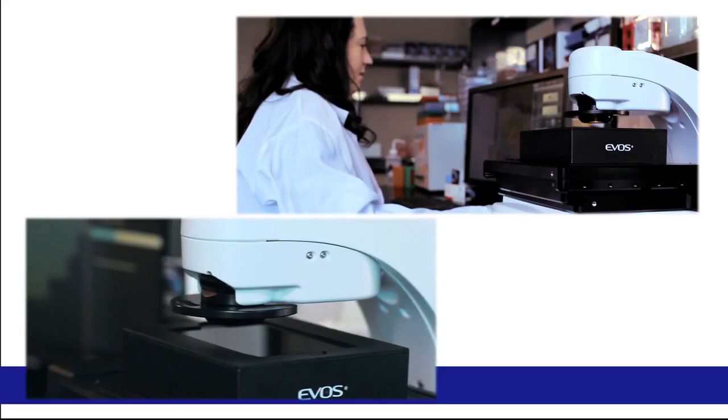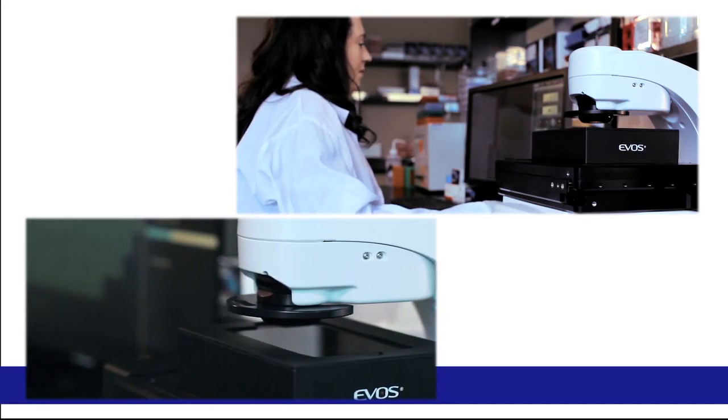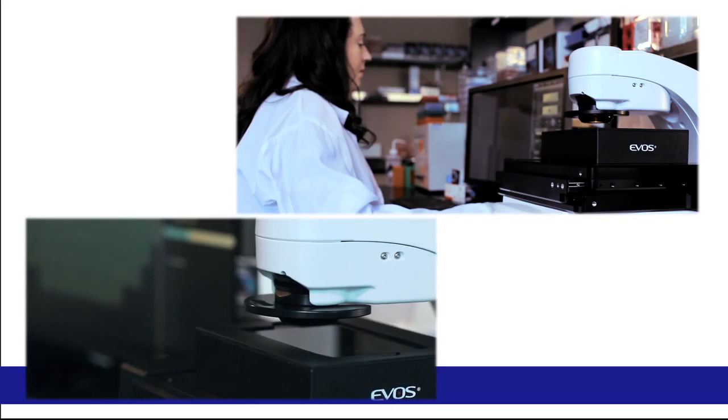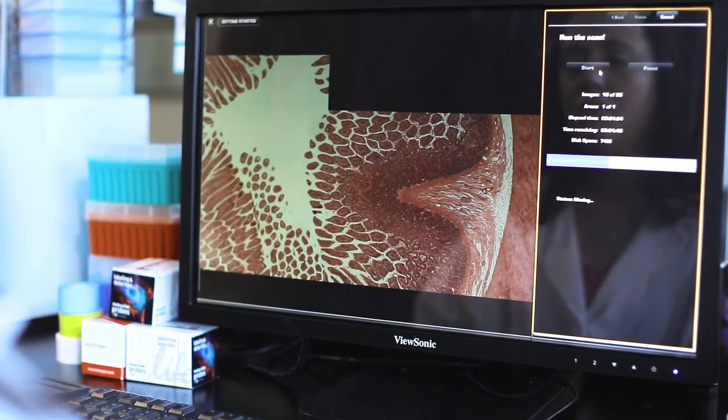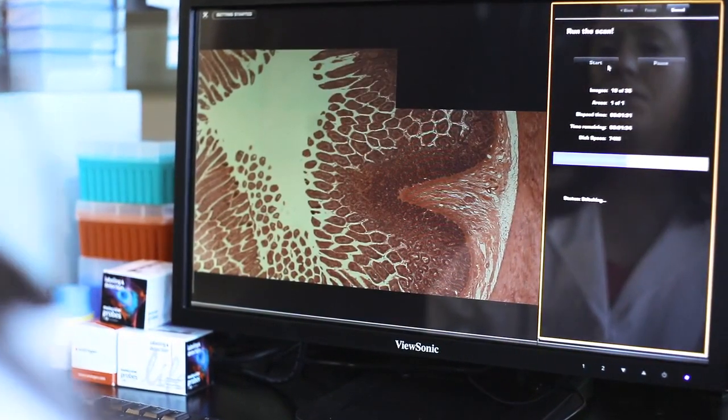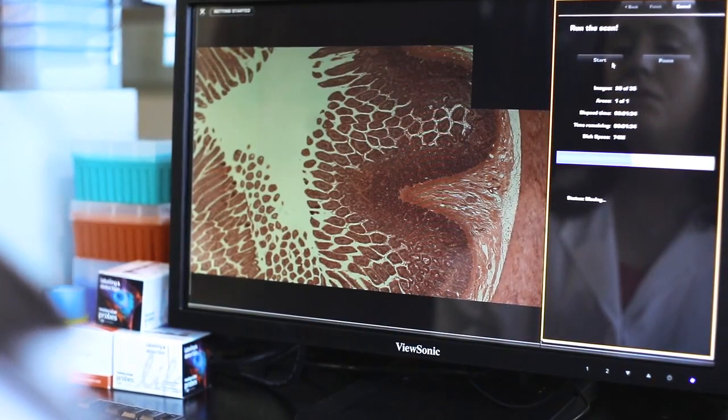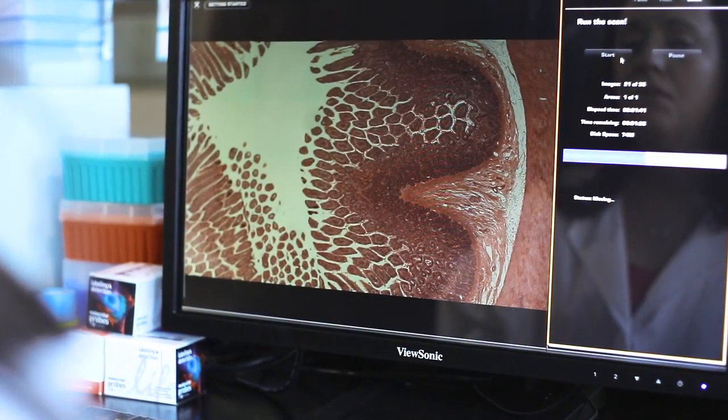The EVOS FL Auto is capable of a number of applications that have traditionally been reserved for large, well-funded labs or imaging core facilities. The EVOS FL Auto will capture higher magnification sequential images within a sample area or well, and then stitch them together into one image, allowing users to create high-resolution images that can also be viewed at a macro level.